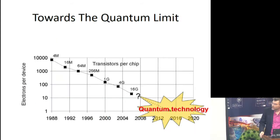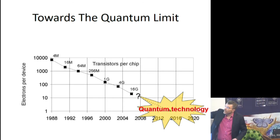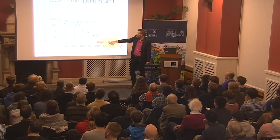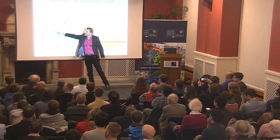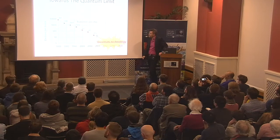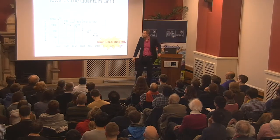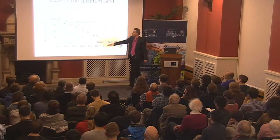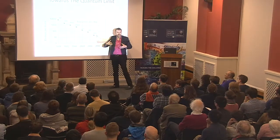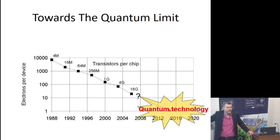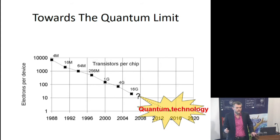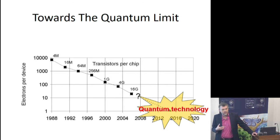Here is a typical picture showing how many electrons we need to encode one bit of information, and you can see this is going down exponentially. Another way of saying the same thing is how many transistors you can cram into a single chip — these are the basic operations inside your computer. Now we're already at the limit of quantum technologies, talking about a handful of electrons. But this encoding is still largely classical. Can we really utilize the full potential of quantum mechanics to do that?